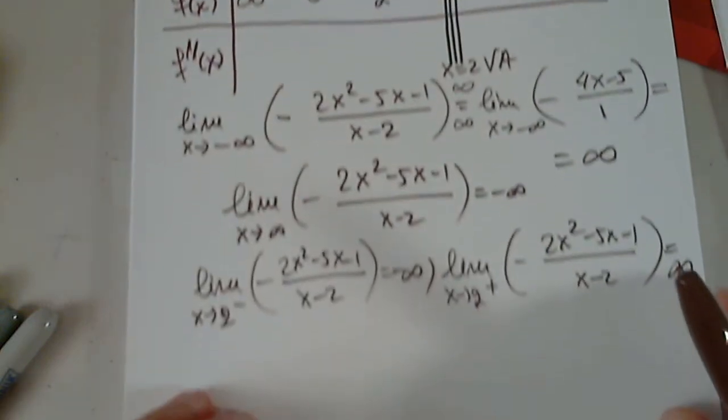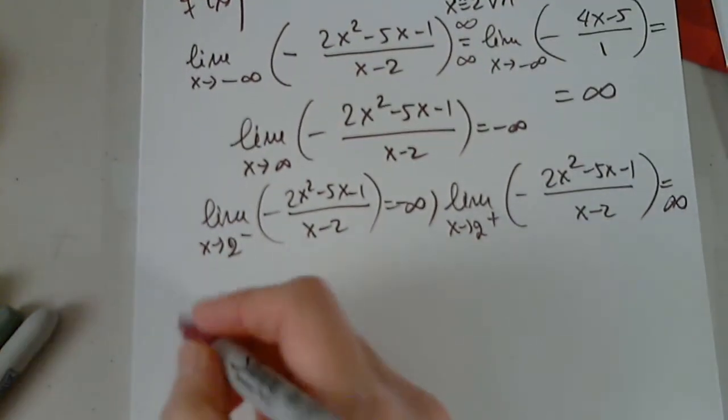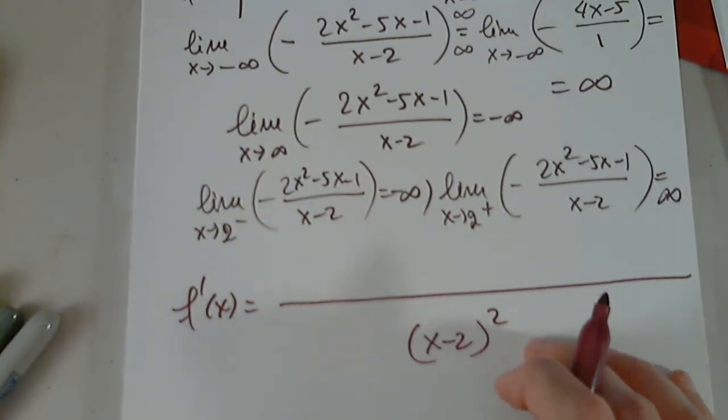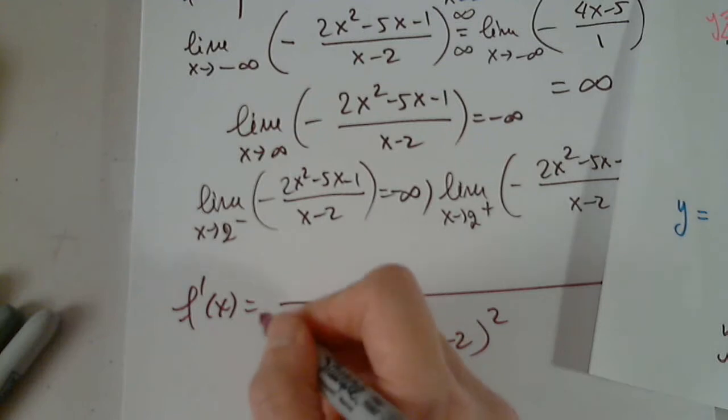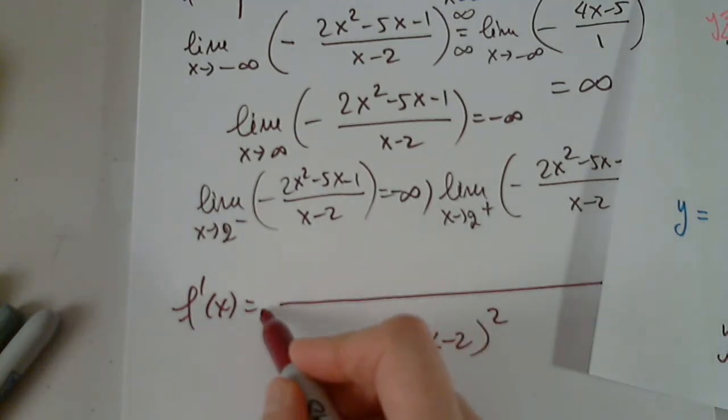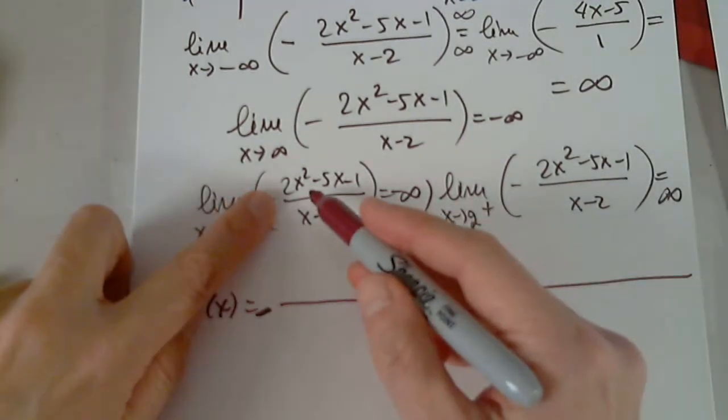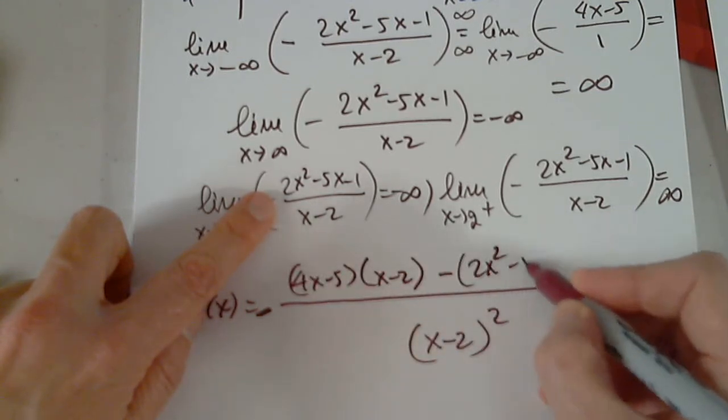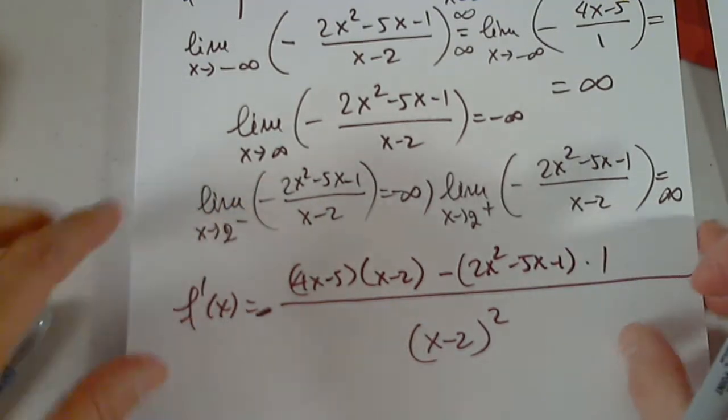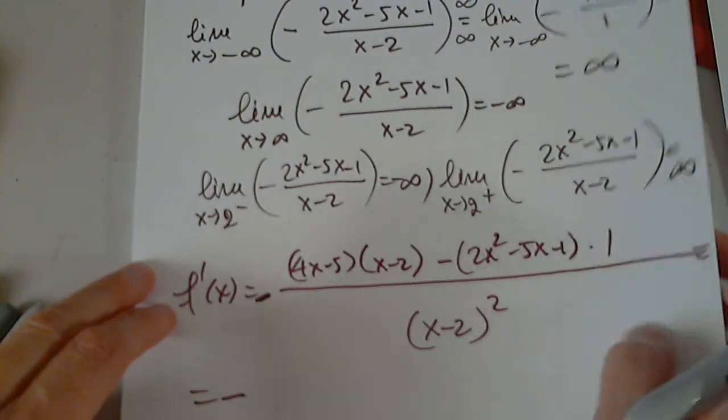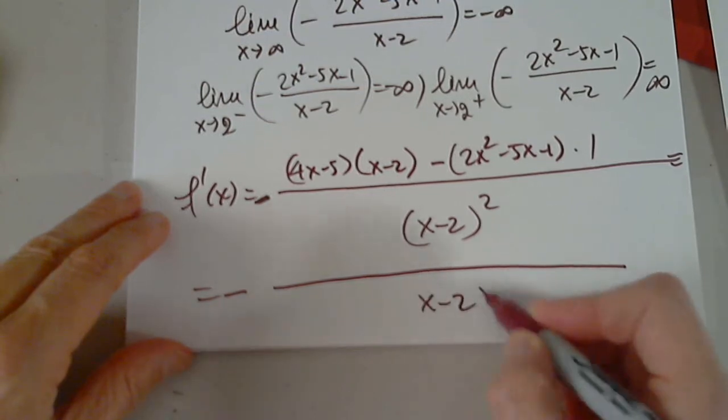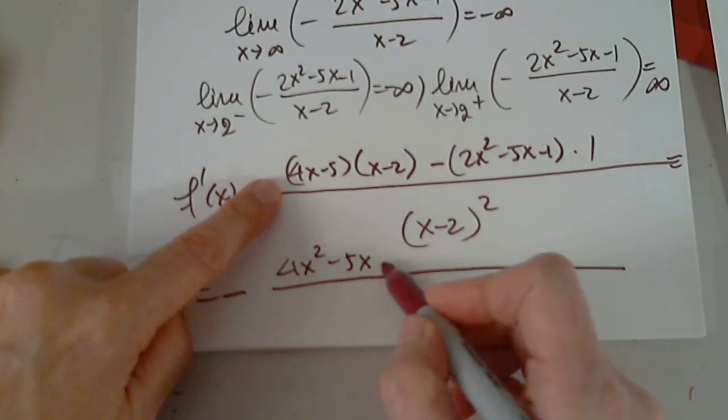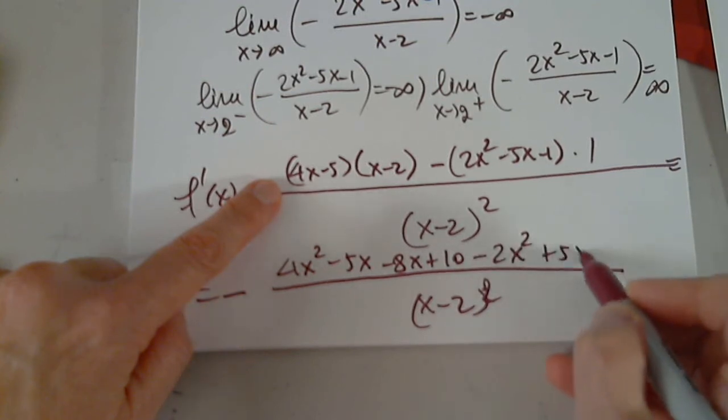So I'm ready for the first derivative, which is not nice at all, but it is what it is. The denominator is x minus 2 squared. The numerator, I'm going to leave the negative outside of the entire fraction. So the numerator prime is 4x minus 5 times x minus 2, minus 2x squared minus 5x minus 1 times the denominator prime. Maybe it's not bad. Maybe it's not that bad.